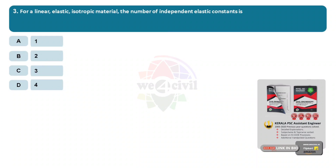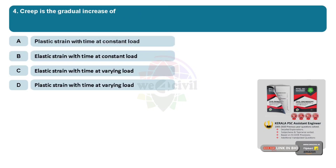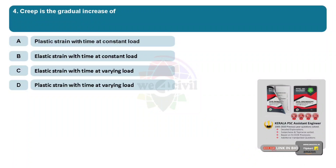For a linear elastic isotropic material, the number of independent elastic constants is? Option A, 1. Option B, 2. Option C, 3. Option D, 4. Answer: Option B, 2. Creep is the gradual increase of? Option A, plastic strain with time at constant load. Option B, elastic strain with time at constant load. Option C, elastic strain with time at varying load. Option D, plastic strain with time at varying load. Answer: plastic strain with time at constant load.